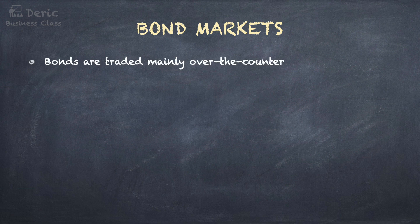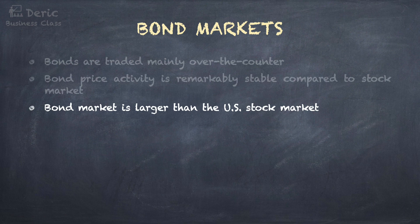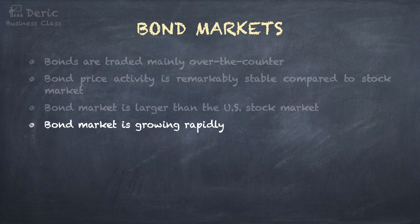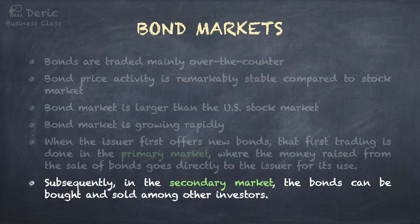For the bond markets, bonds are traded mainly over the counter, not on exchanges. Bond price activity is remarkably stable compared to the stock market. Surprisingly, the bond market is larger than the US stock market, and in many countries the bond market is growing rapidly. When the issuer first offers new bonds, that first trading is done in the primary market, where the money raised from the sale of bonds goes directly to the issuer for its use. Subsequently, in the secondary market, the bonds can be bought and sold among other investors.